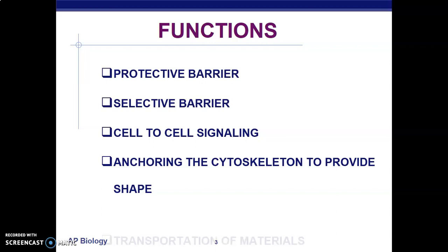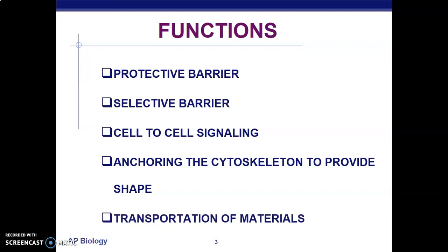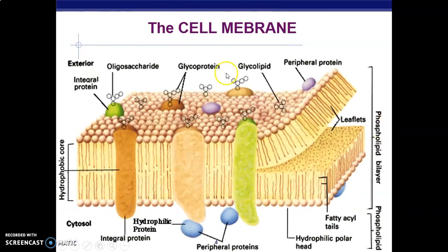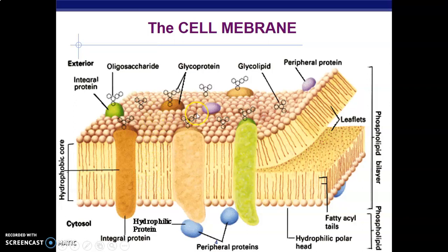The cytoskeleton provides the shape of the cell and allows transportation of materials. The cell membrane is a lipid bilayer containing phospholipids and two types of proteins: peripheral proteins on the outer or inner surfaces, and integral proteins that span through the entire membrane. Phospholipids have a hydrophobic core and hydrophilic ends — the hydrophilic ends are water-soluble and the hydrophobic ends are not.